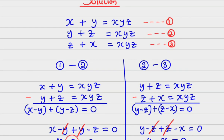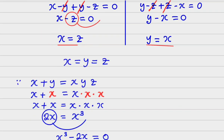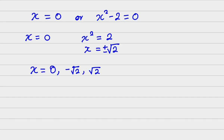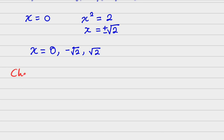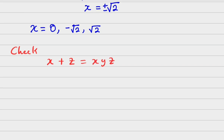These are the three answers that we have gotten, and all of them are solutions. We can pick any of the equations and test whether we are correct. I am going to pick the last one, which is z plus x equals xyz. Let's check. We said x plus z equals xyz. Now, x is 0, and since x equals z equals y, we have 0 plus 0 equals 0 times 0 times 0. So, it checks out. This is correct.